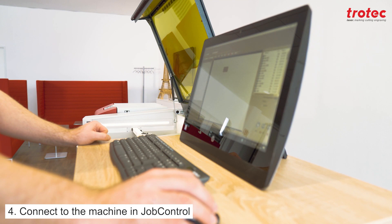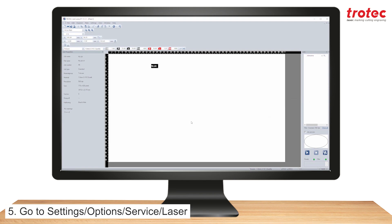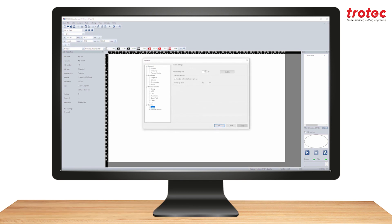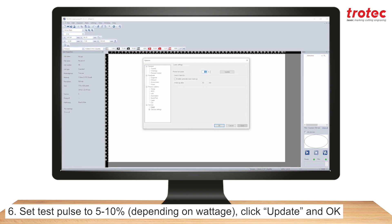Connect to the machine in the job control software. Go to settings then options, service and then laser. Set the test pulse to 5 to 10 percent depending on the wattage. Click update and OK.